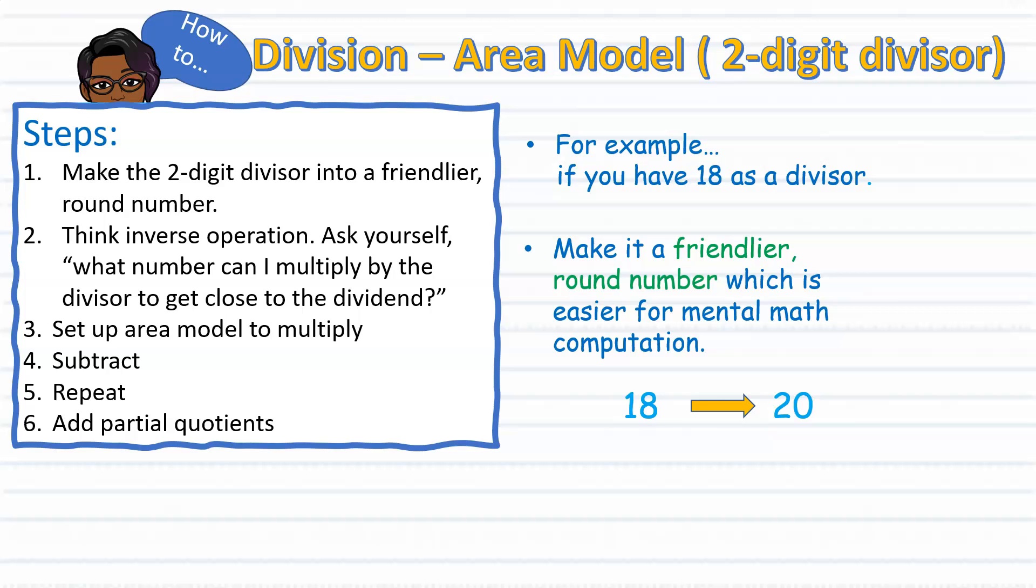With step two, we'll be using some inverse operation, that's multiplication. And although we're dividing, we'll see how multiplication is essential in understanding how to divide. Step three, we'll be setting up our area model for subtracting. Step five, we'll continue to repeat those steps as necessary. And finally, we will add up our partial quotients to find the answer.